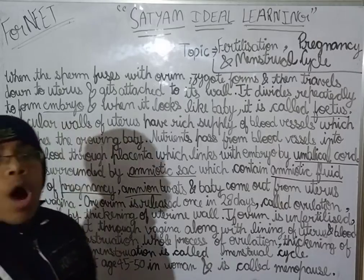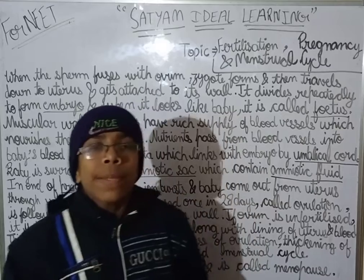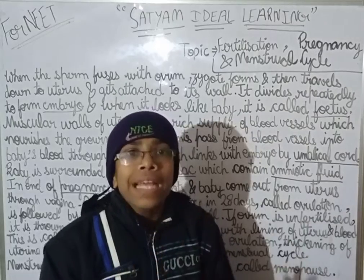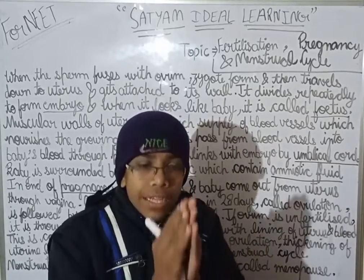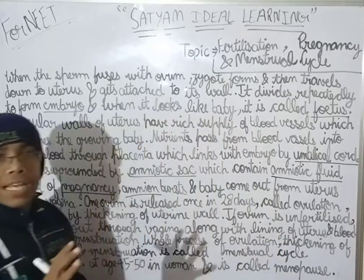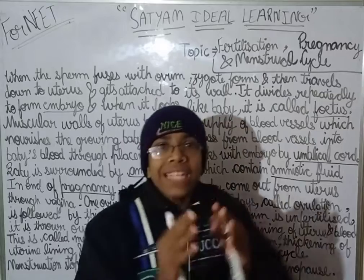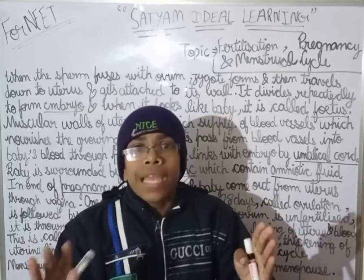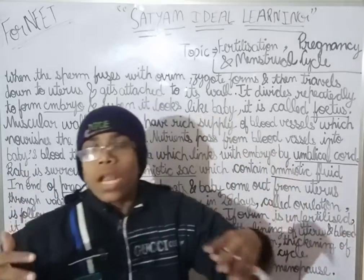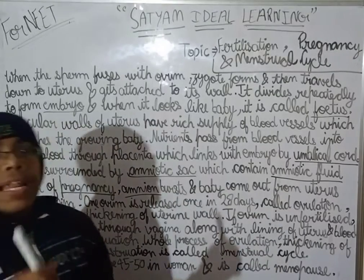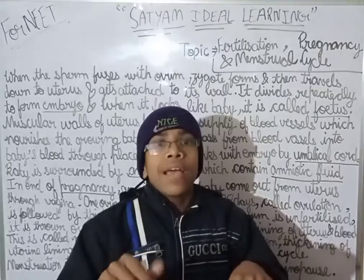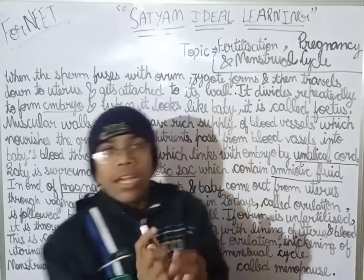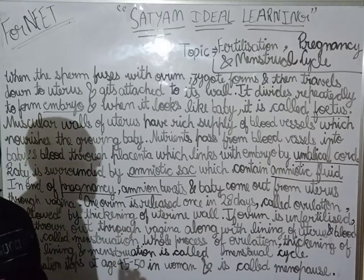Identical twins form when a single fertilized egg divides into two. Since the genetic characters are the same in both, they grow into two embryos and then two babies that are identical to each other, because they originated from a single fertilized egg.